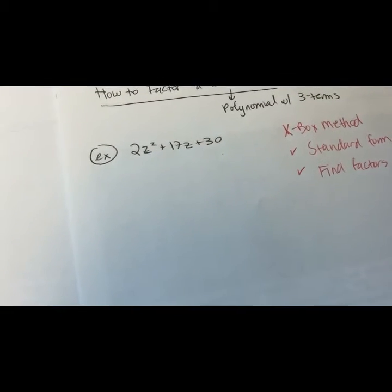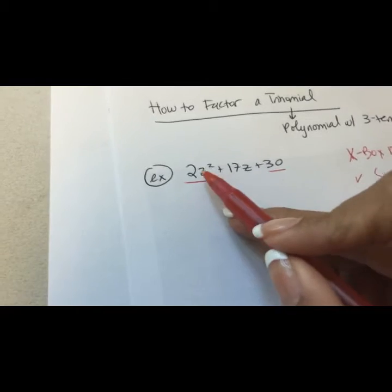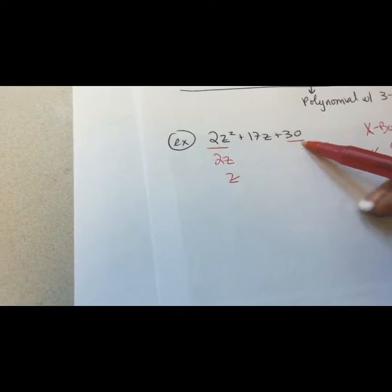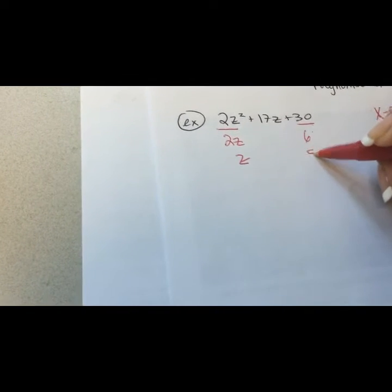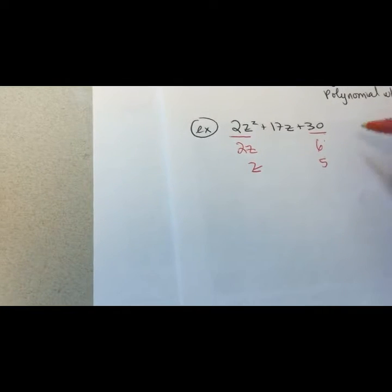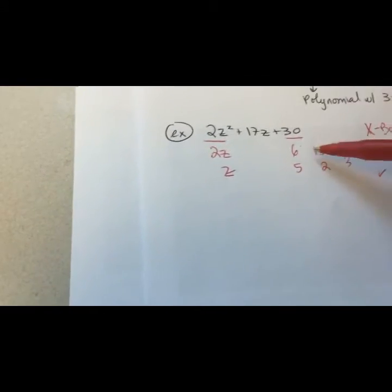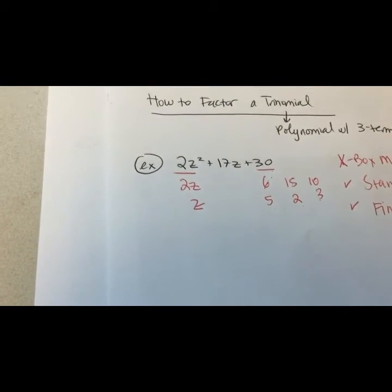The next step is to find the factors of the first and third term. The first term is 2z-squared, so I ask myself: what two things multiply to give me 2z-squared? The answer is just 2z times z — that's the only option. Then for the last term, 30, there are several options: 6 times 5, 15 times 2, 10 times 3, and also flipping those — 5 and 6, 2 and 15, 3 and 10.